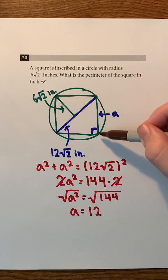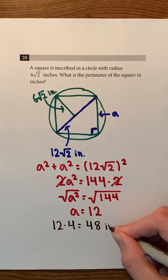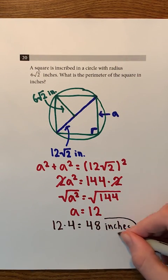Remember that a square has 4 sides that all have the same length. So, we can just multiply 12 by 4 to get 48. Therefore, the perimeter of the square must be 48 inches.